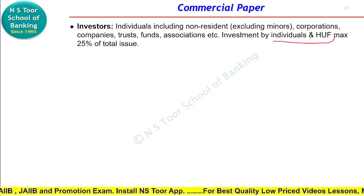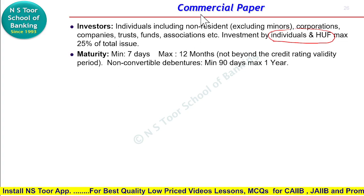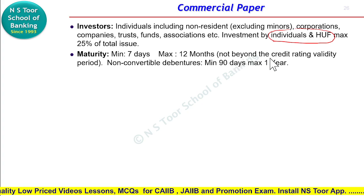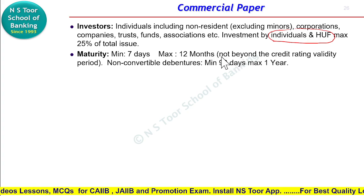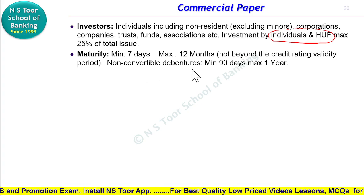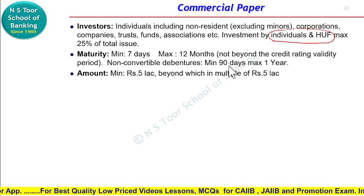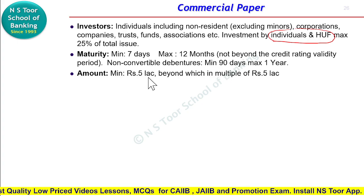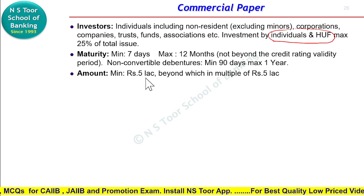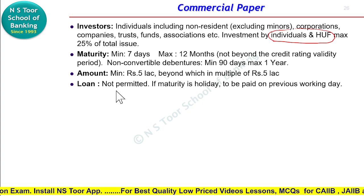Ab inki maturity period kya hai? Minimum maturity is 7 days, maximum maturity is 12 months, aur kisi bhi case mein jo credit rating ki validity hai uske beyond inki maturity period nahi hogi. Agar ye non-convertible debenture ki form mein issue hote hain to NCD minimum 90 days ka maturity hai, maximum one year ka maturity hai. Ab inki amount kitni ho sakti hai — minimum amount is rupees 5 lakh, and beyond that the multiple value is rupees 5 lakh, yani 5, 10, 15, 20 us prakar se 5 ke multiples mein issue kiya ja sakta hai.